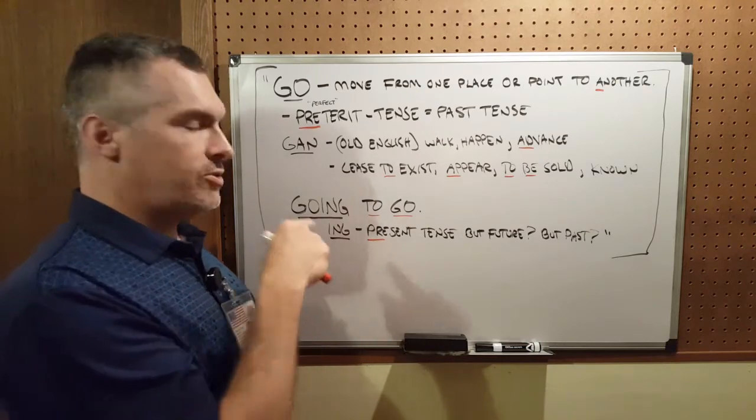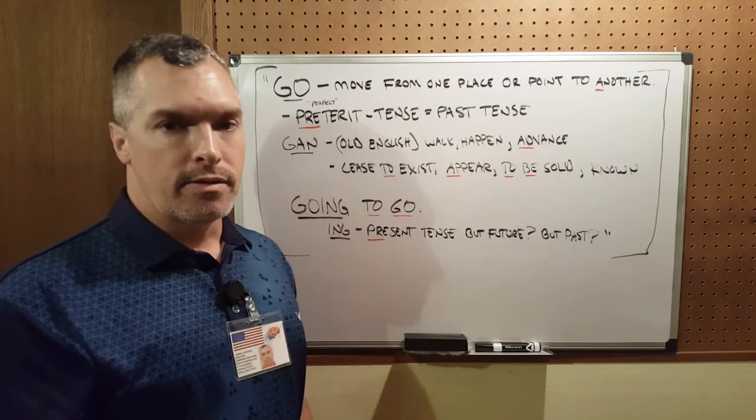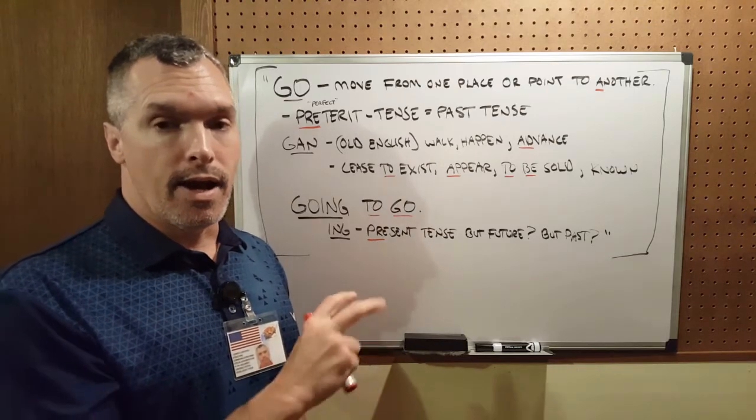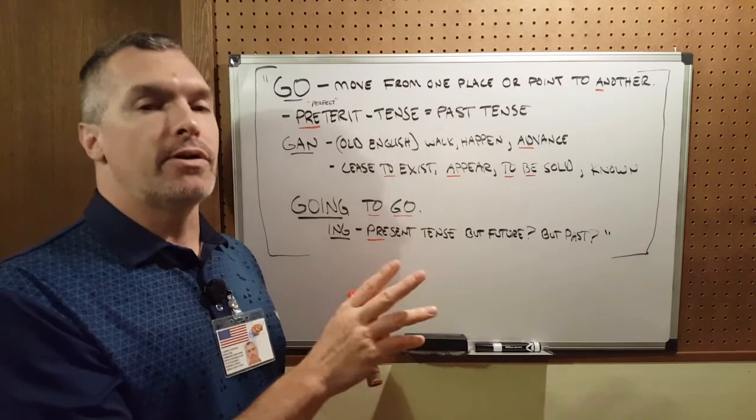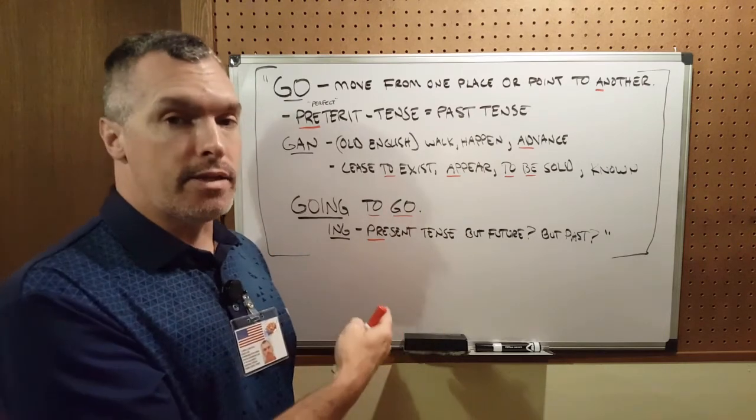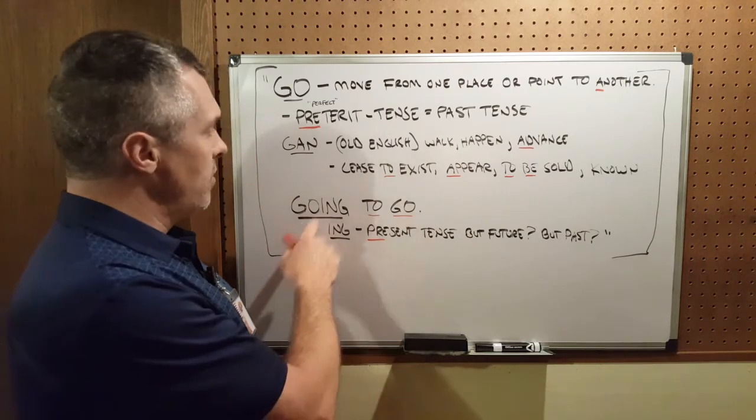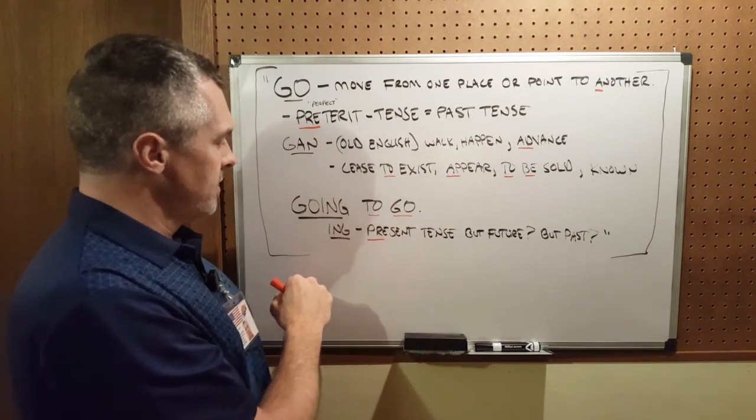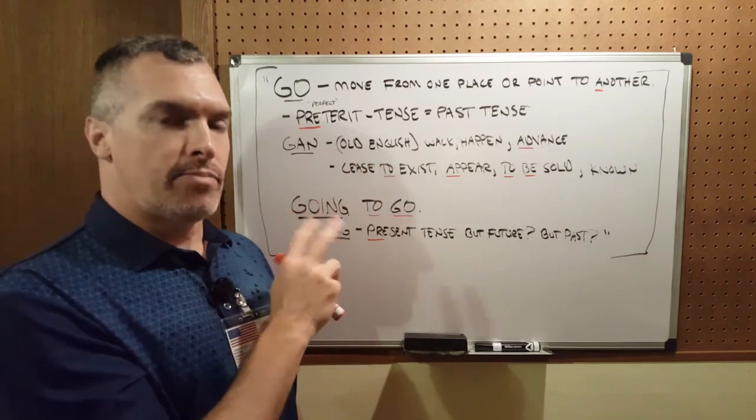Which brings me to the ing. In the English language we are taught that you can put ing as a suffix on a noun, I'm sorry, on a verb, and make it a noun, a gerund noun. So we have go, which is past tense, and put the ing on it, supposedly makes it present tense.